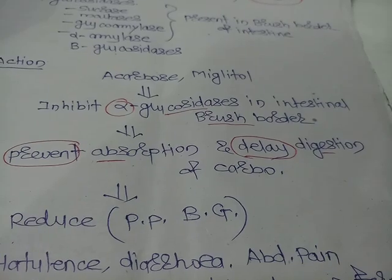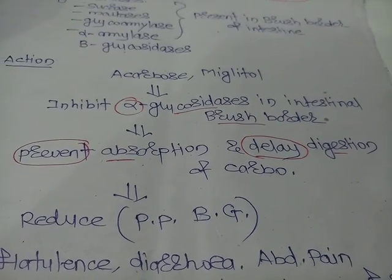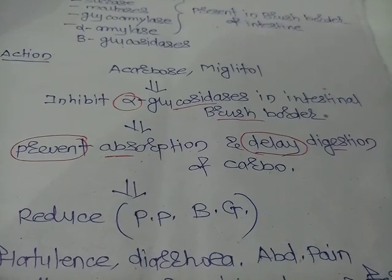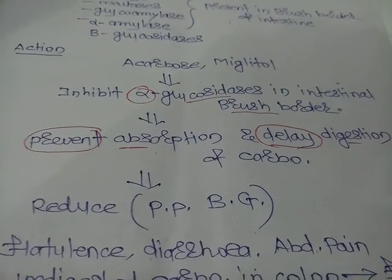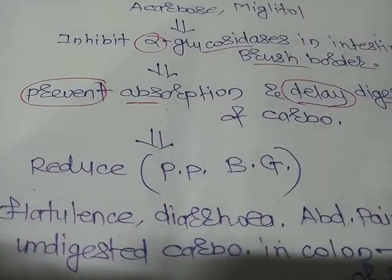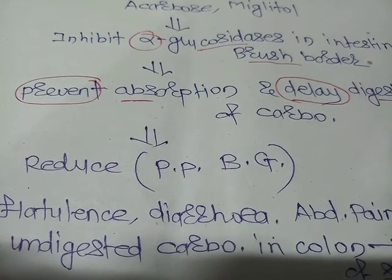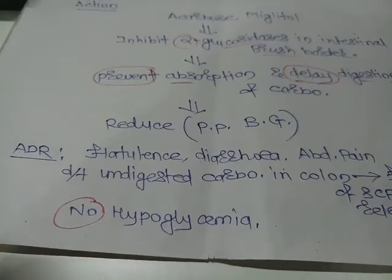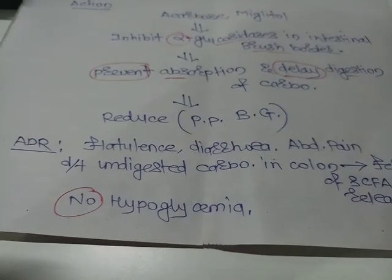This inhibition will prevent absorption and delay digestion of carbohydrates. As a result, it will reduce the postprandial blood glucose level.